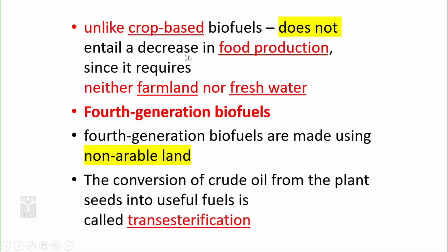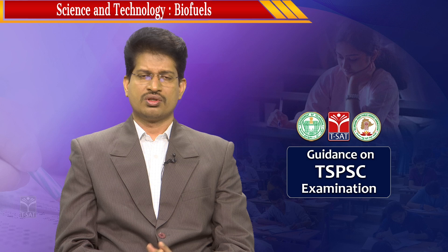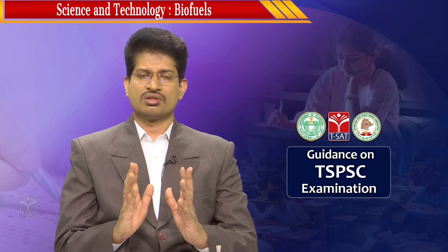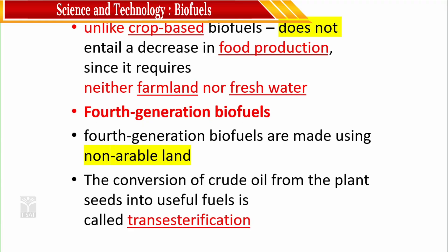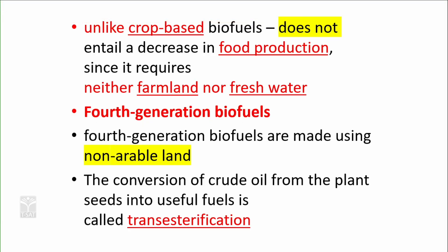Unlike crop-based biofuels, algae-based biofuels do not entail a decrease in food production since they require neither farmland nor fresh water. Treated sewage water is supplied for cultivation. In the case of fourth generation biofuels, which use non-arable land through transesterification — Jatropha, castor, and Pongamia pinnata are examples — biodiesel can be produced through the transesterification process.